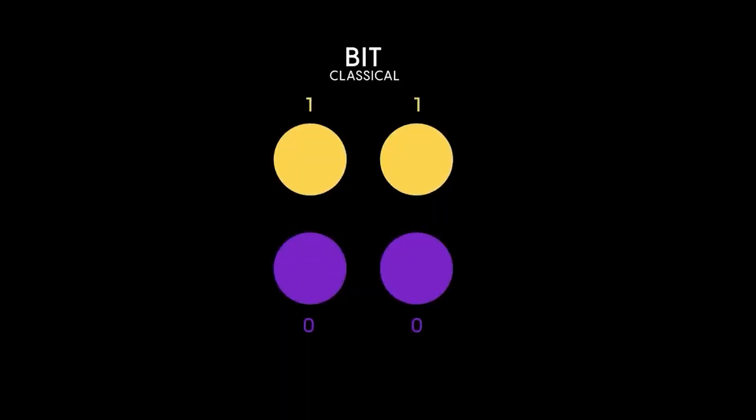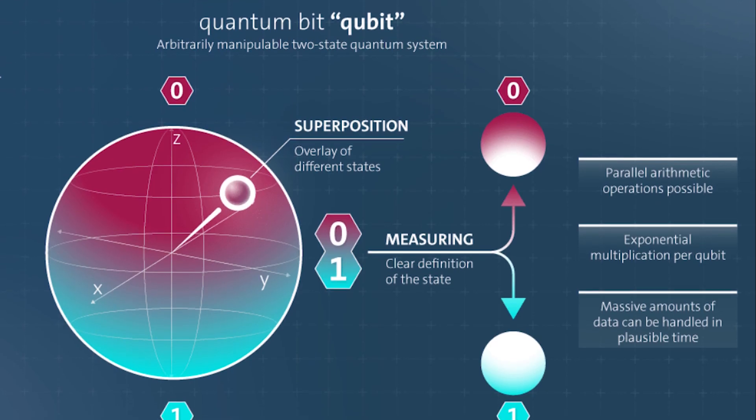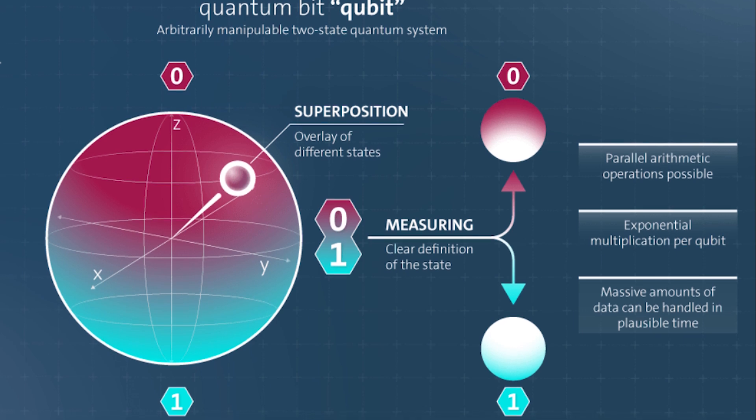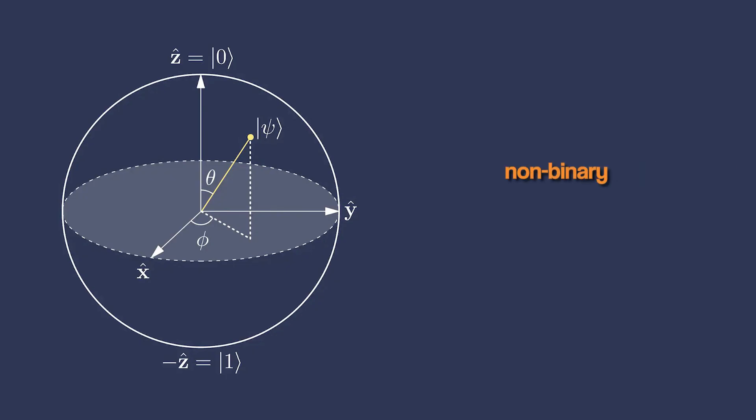But while bits can only either be a one or zero, quantum computers use qubits. They can represent ones or zeros. But the cool thing about qubits is they can represent both a one and a zero at the same time. This means that a qubit is non-binary, giving them the option to hold exponentially more data.